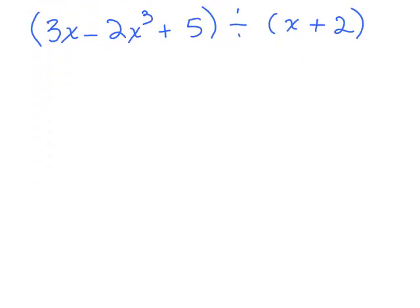All right, so how do we start this? Well, I first want to make sure I could use synthetic division, so I have a linear factor that I'm dividing by x plus 2, so that's fine. Remember, you can't be dividing by x squared plus 2 or something like that. So we can go ahead and take the x plus 2, equal it to 0 and solve and that tells us what number to put in the little box.